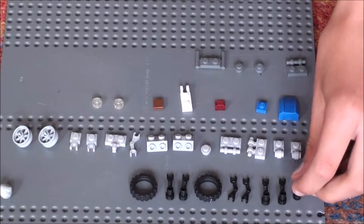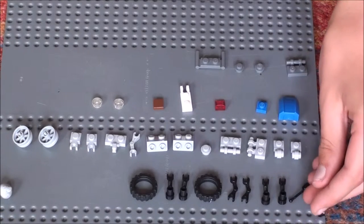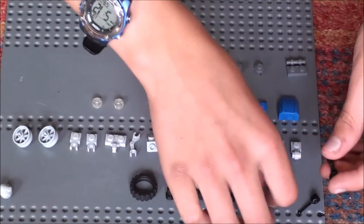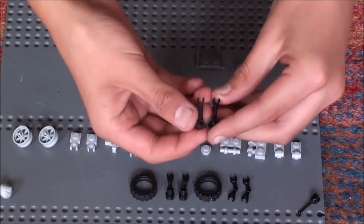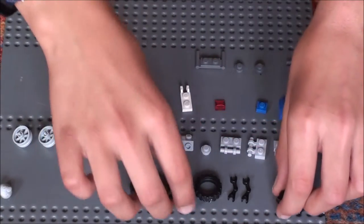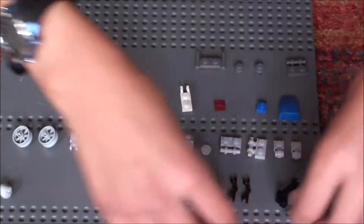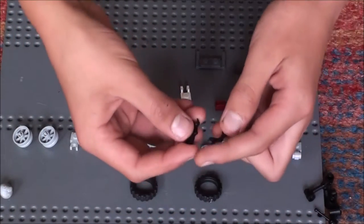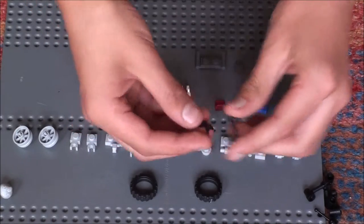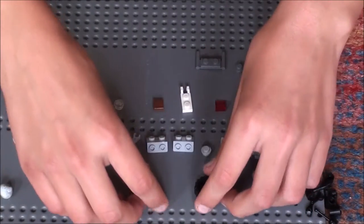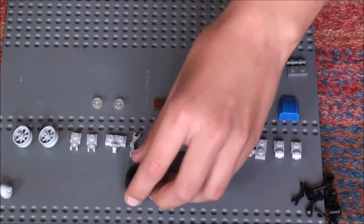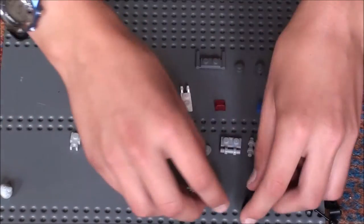Now the pieces that we've got is a gear stick, four of these little holding pieces, they're going to hold the wheels in place. Two robot arms, two robot arms, black or light grey, tyres that fit onto these wheels.